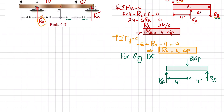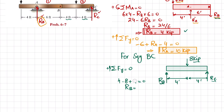RB is known as 4 kips. Finding RC using sum of forces in the Y direction equal to zero, with upward positive: RB − 8 + RC = 0, so 4 − 8 + RC = 0, therefore RC = 4 kips.